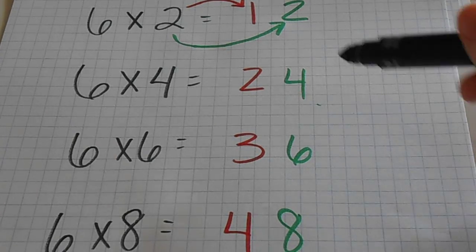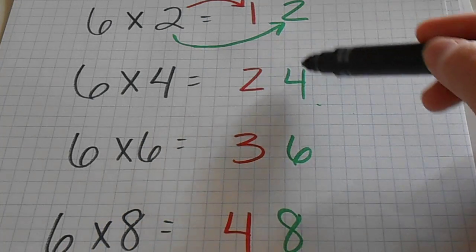Some kids when I show this to them, they see the pattern here: one, two, three, four, and then two, four, six, eight.